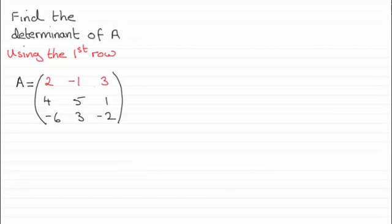In this example, we need to find the determinant of matrix A using the first row: 2, -1, 3. Just give you a moment to pause the video.